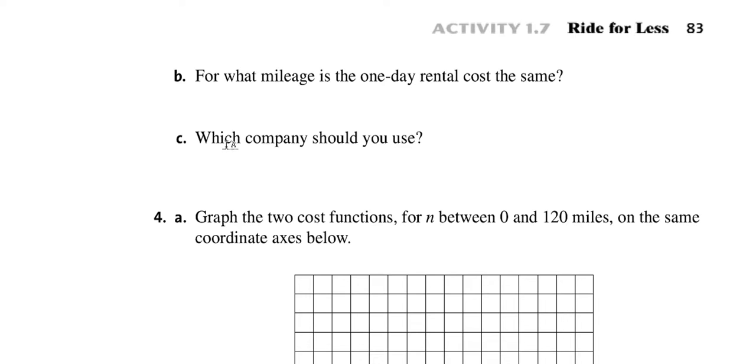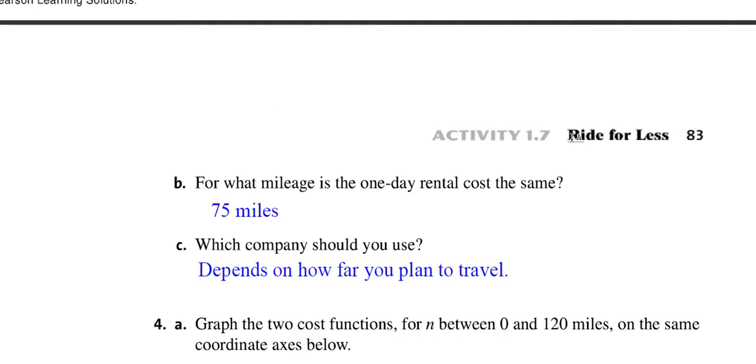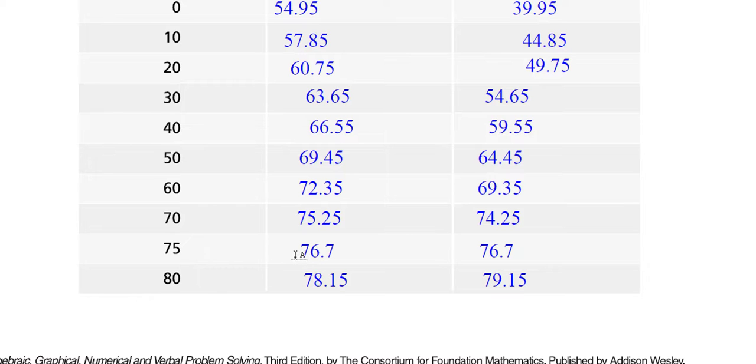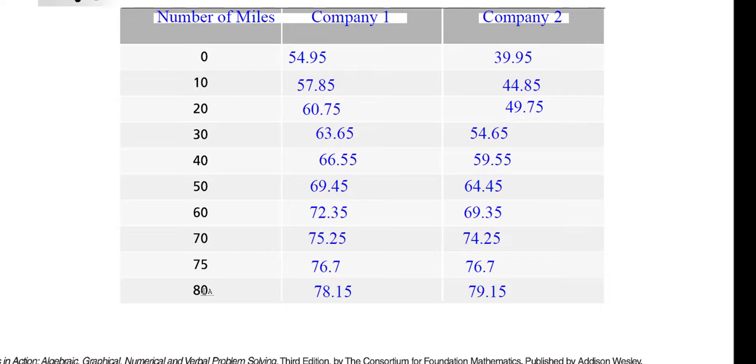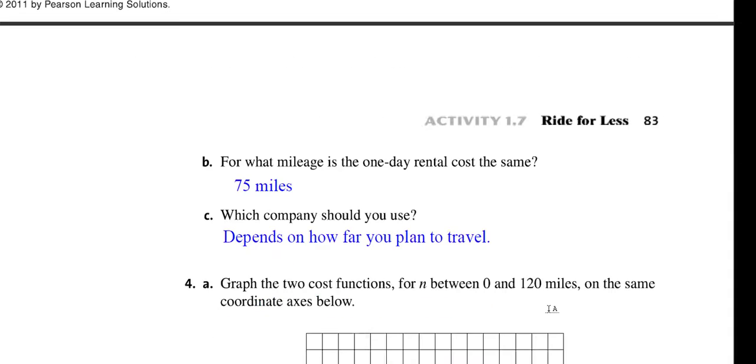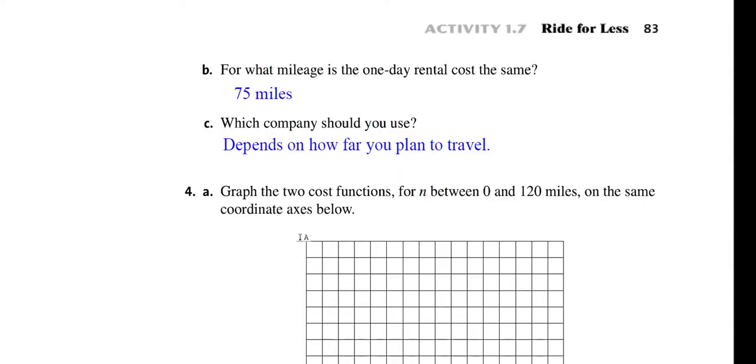So for Part B where it says what mileage is the one-day rental the same, I would say 75 miles. And when it says which company should you choose, I guess it depends on how far you plan to travel. If you travel less than 75 miles, company 2 is cheaper. And if you travel greater than 75 miles, it looks like company 1 is going to be cheaper. So this really depends on how far you plan to travel.